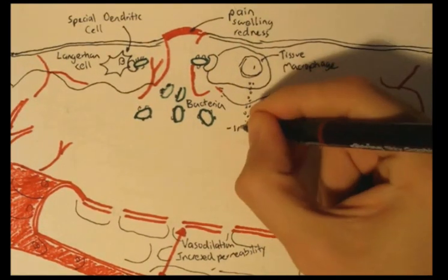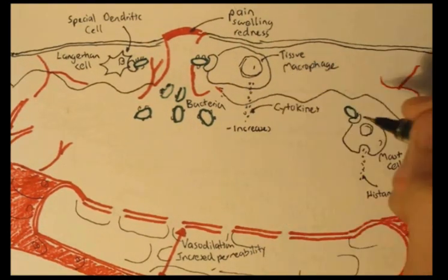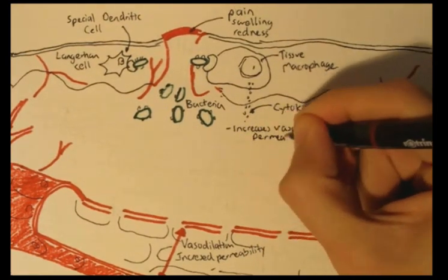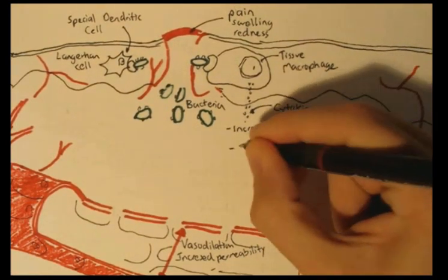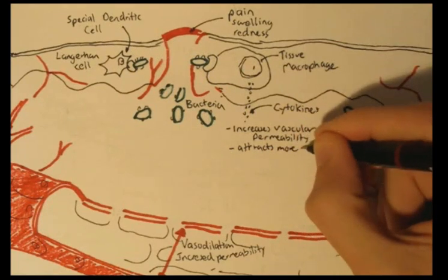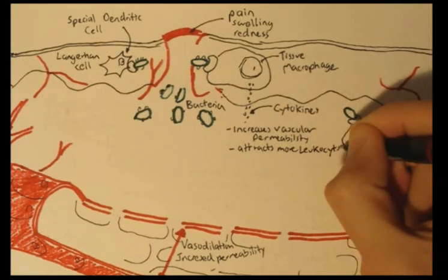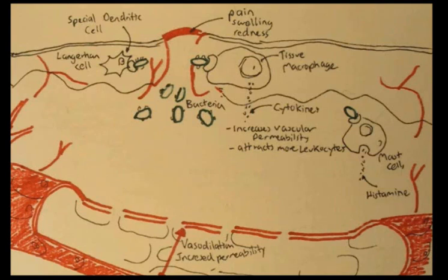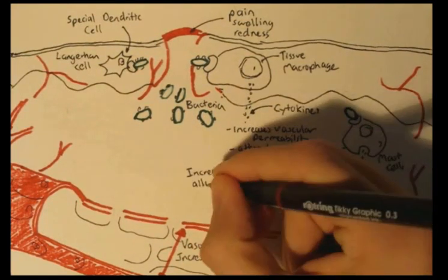Cytokines are used for communication with other cells. In this case they increase vascular permeability, attracting more immune cells to the injured and infiltrated area.